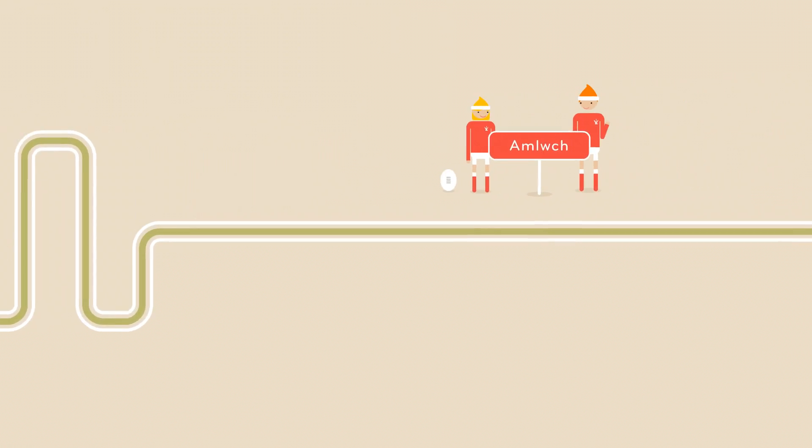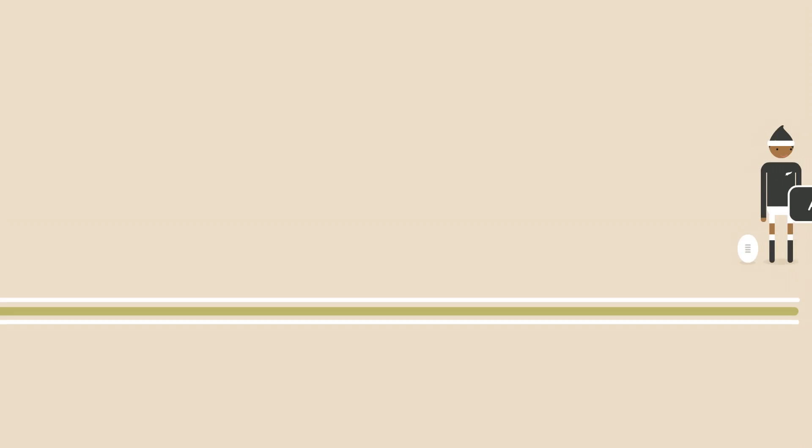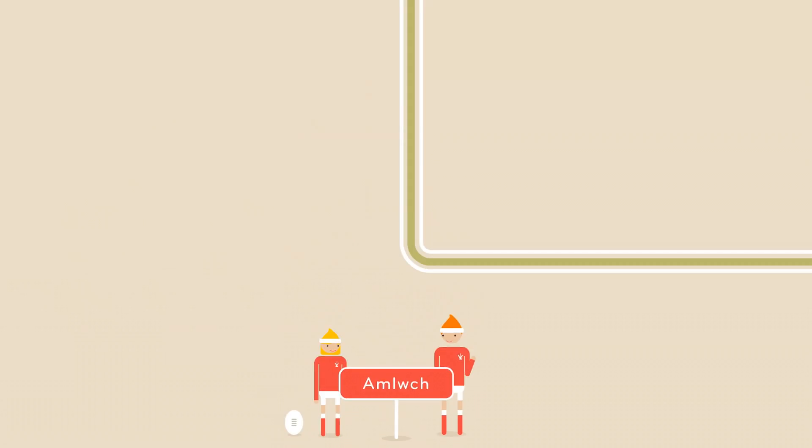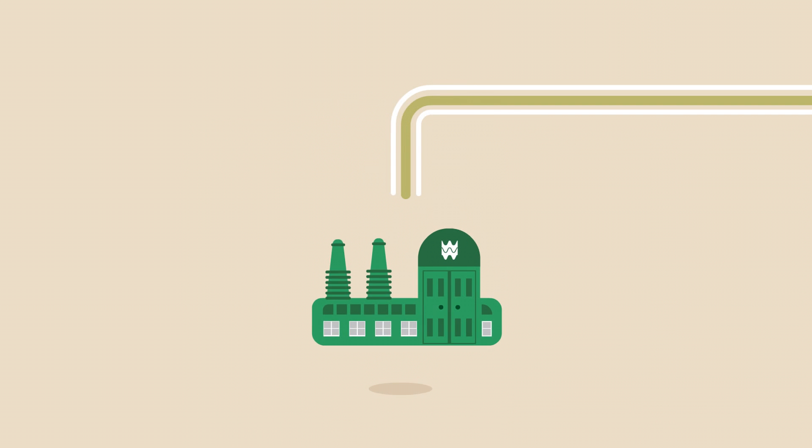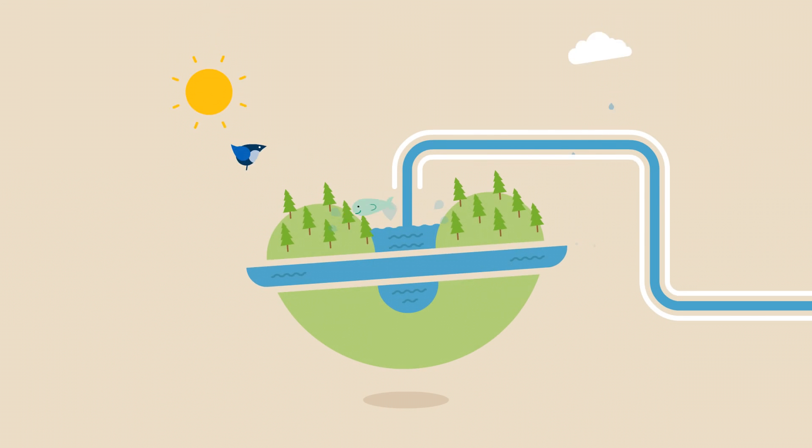We have over 36,000 kilometres of sewers, enough to travel from Amlwch to Auckland and back. They take your dirty water away before it is cleaned at your local treatment works and we return it safely to rivers or the sea.